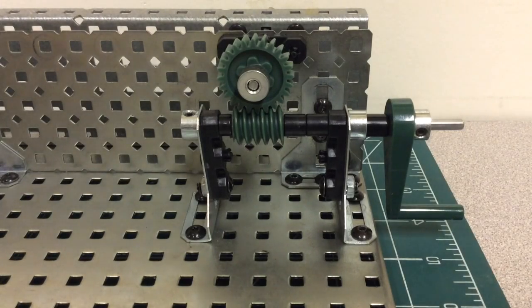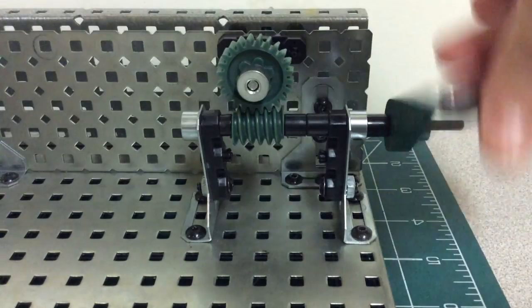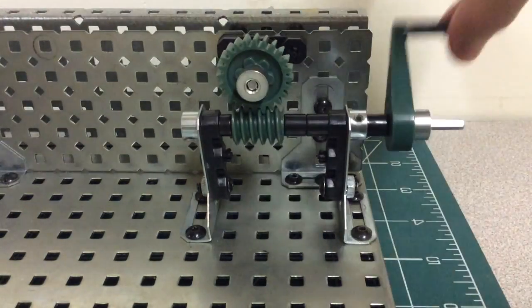The input is the worm. The output is the wheel. And the input motion used is rotary because it rotates in a circle.